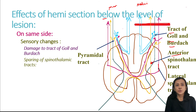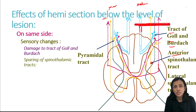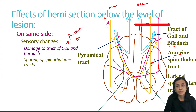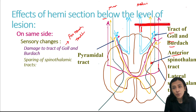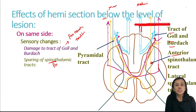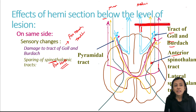Below the level of lesion, on the same side, the tracts of Goll and Burdach are damaged, so fine touch, tactile localization, tactile discrimination, proprioception, vibration, and kinesthetic sensations are lost. However, the spinothalamic tract of the same side crosses to the opposite side and is not damaged, so pain and temperature sensation on the same side are preserved. On the opposite side, pain and temperature sensations are lost because the contralateral spinothalamic tract is damaged.